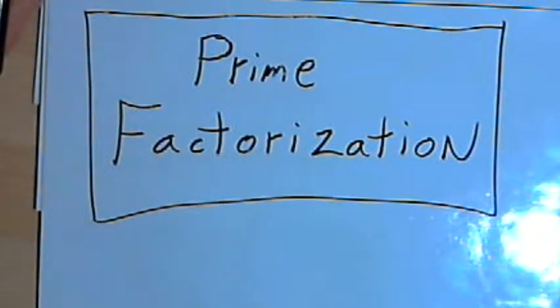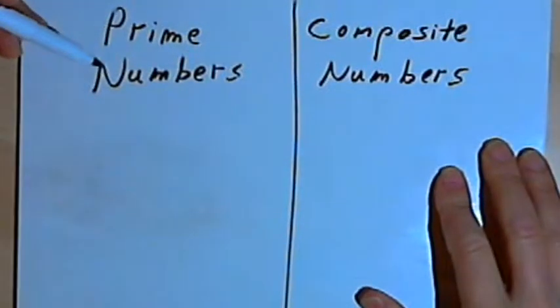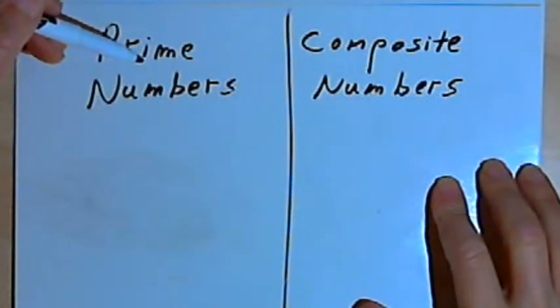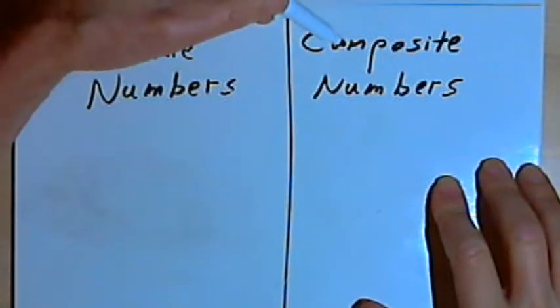But to start with, I want to go over some of the terminology that I'm going to use. So one way to categorize numbers is to break them down into two groups. We can talk about prime numbers and composite numbers.